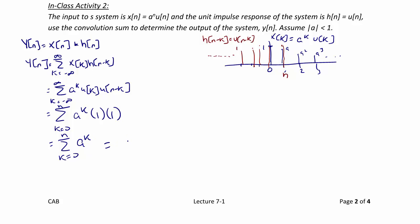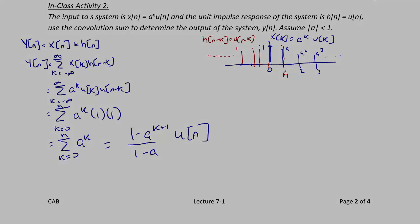This equals, from our math facts at the top of the page, 1 minus a to the n plus 1 over 1 minus a. Once again, this is only valid for n greater than or equal to zero, so we multiply this by u of n.